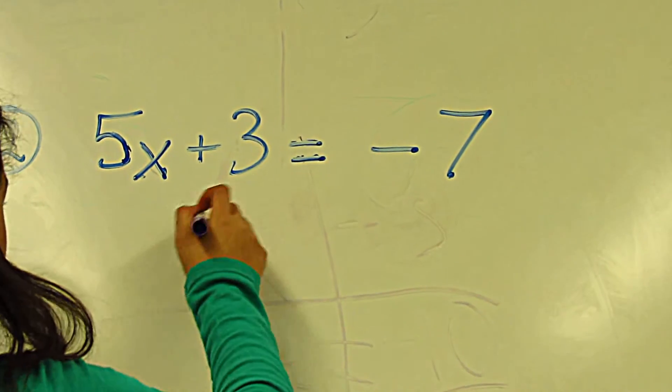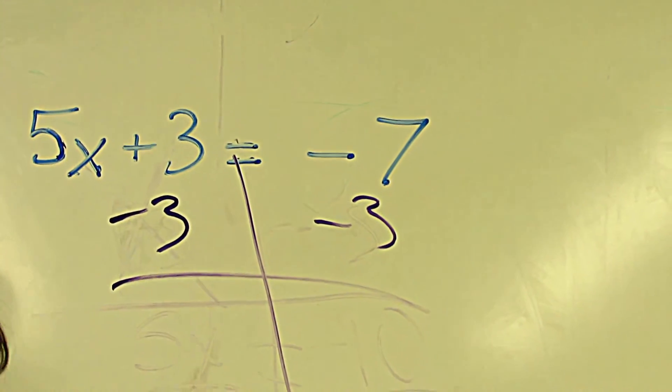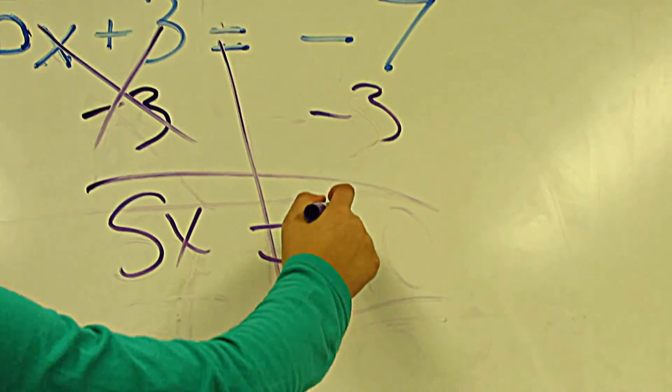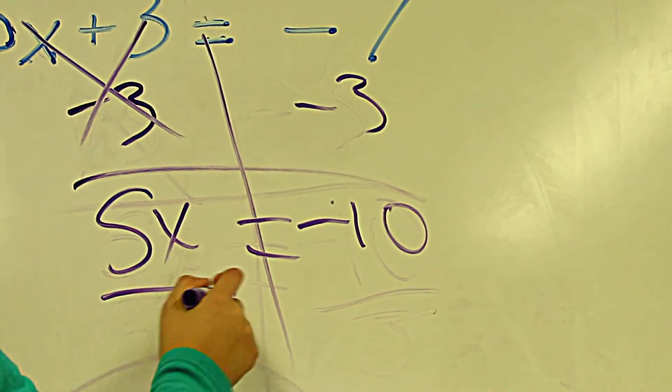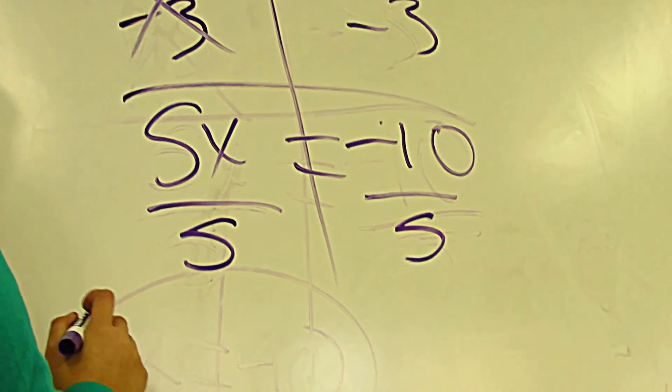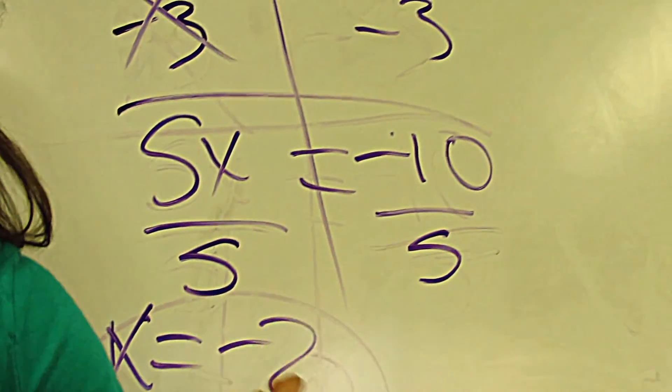We're going to do negative three on both sides again. This crosses out, it will be five X equals negative ten, which we divide by five on both sides. X equals negative two.